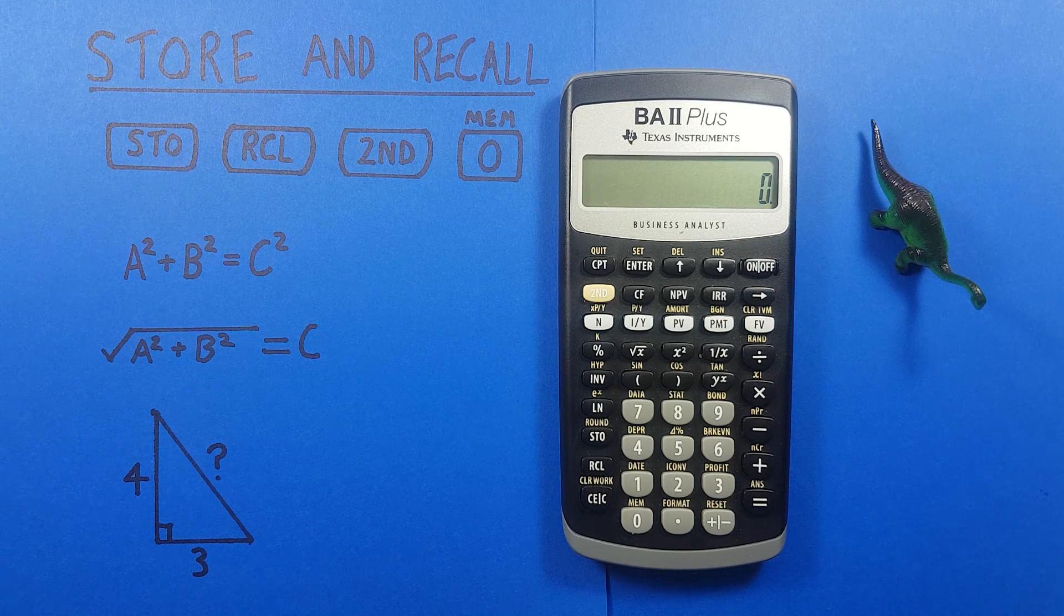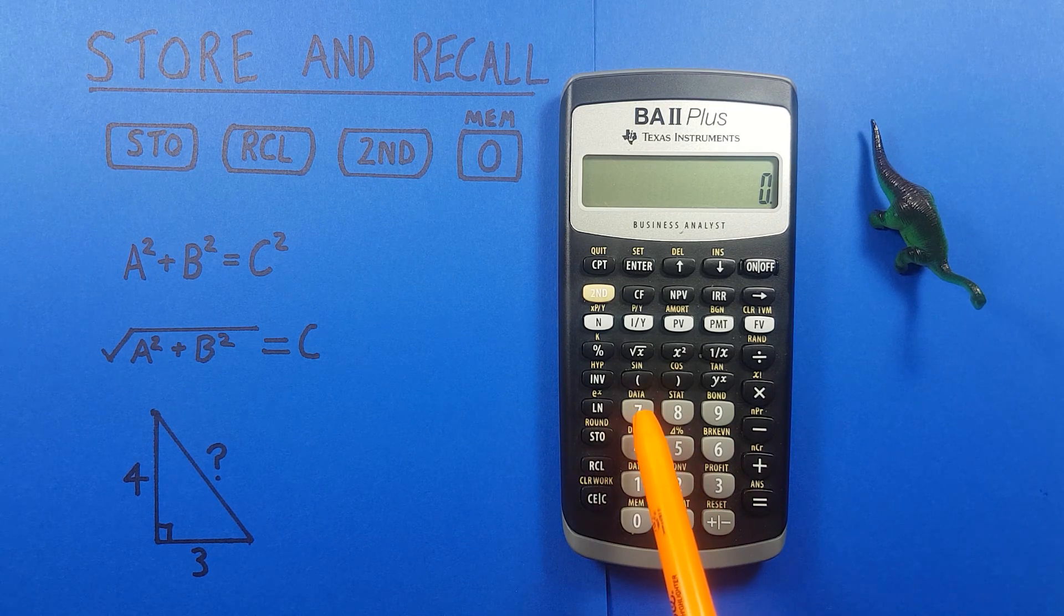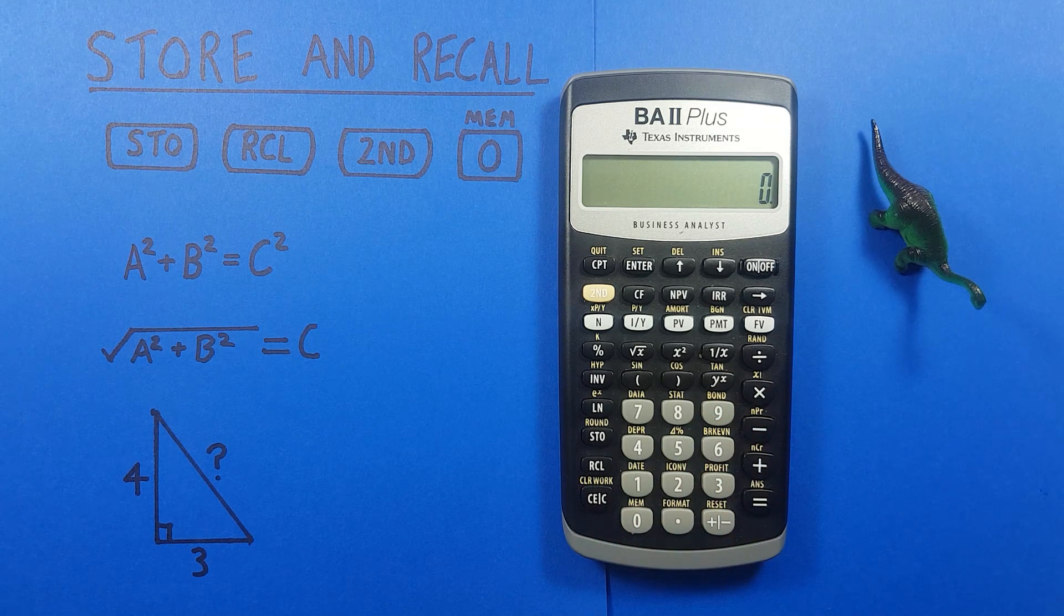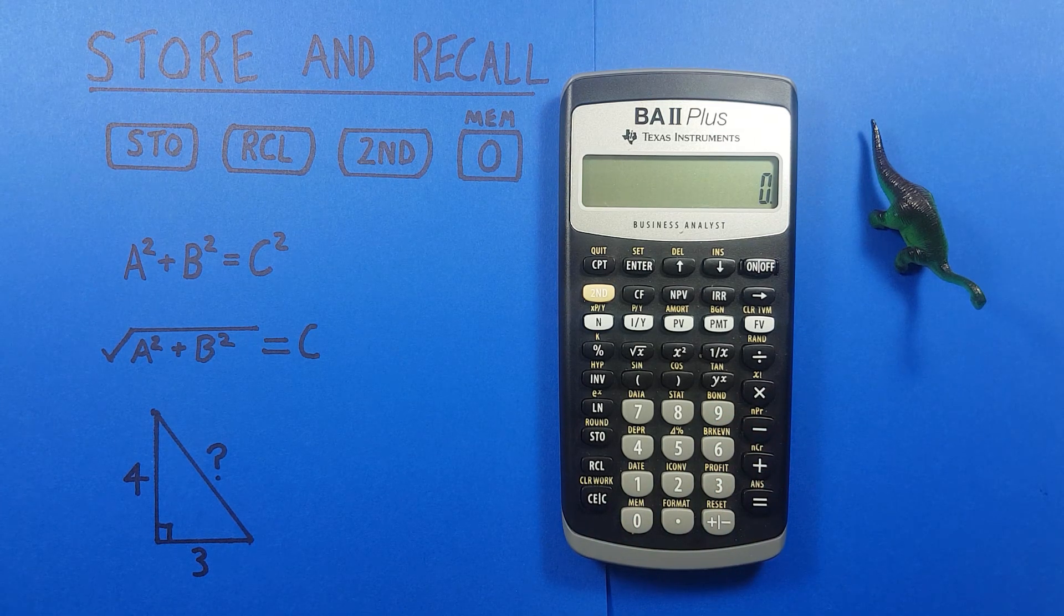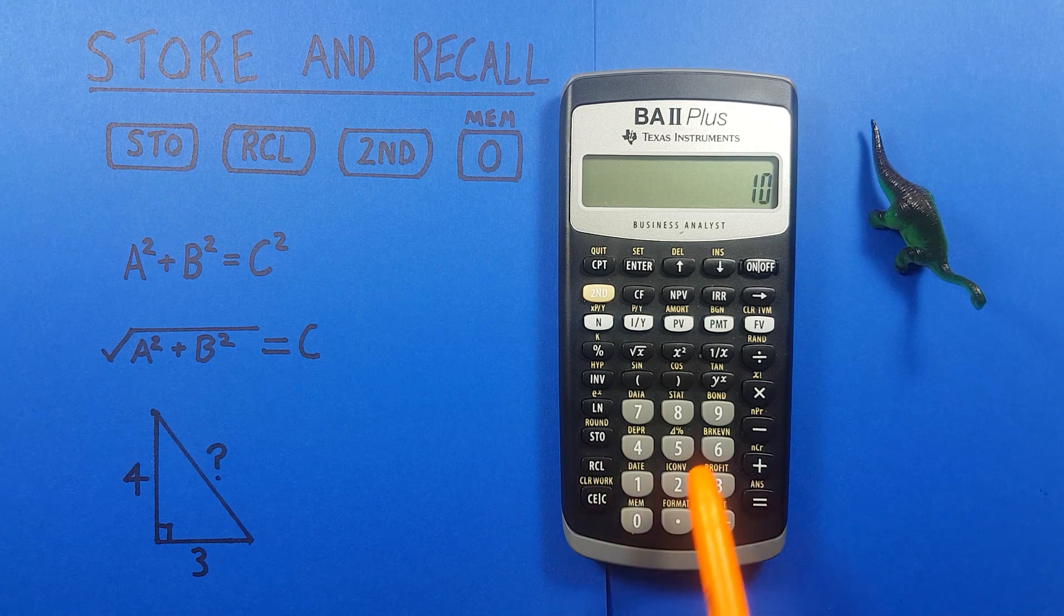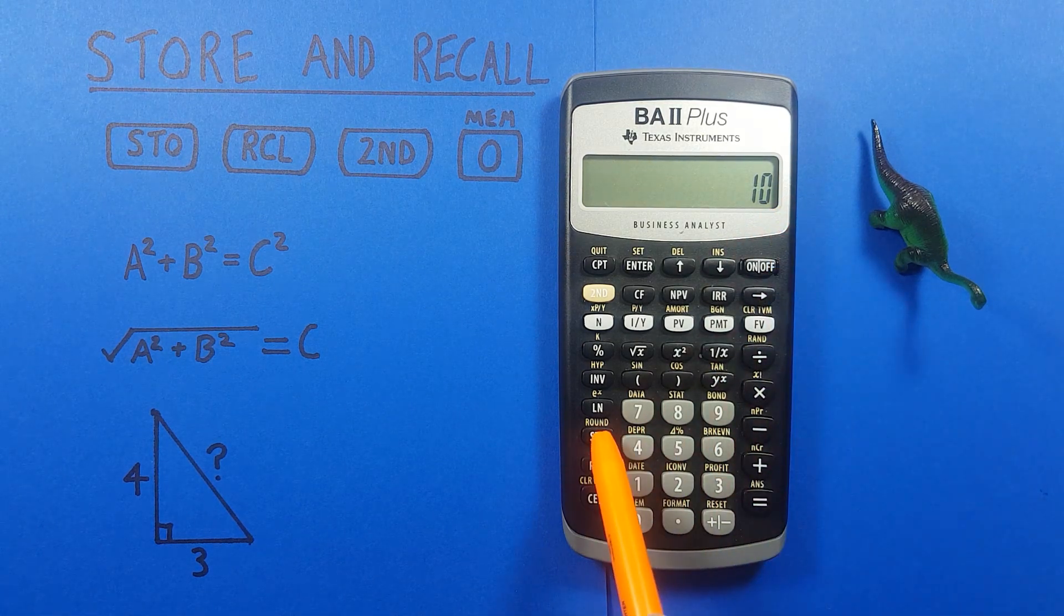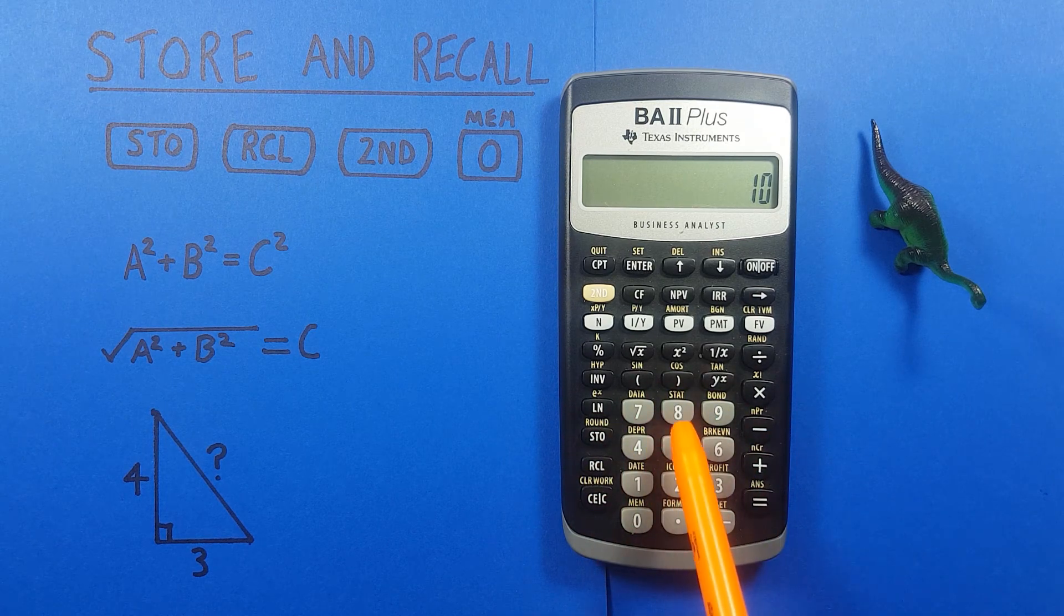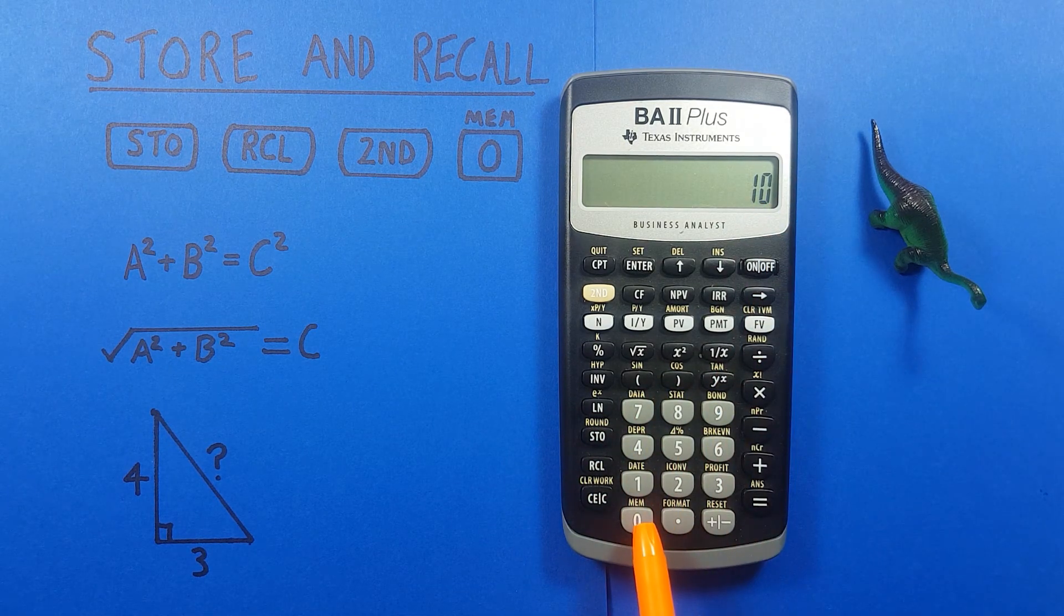Now this calculator has 10 memory slots, one for each number key, so 0 to 9 are each a memory slot. We can store a variable in them by placing it on the screen, so there's 10, then pressing the STO key, and then choosing a key we want to store it in. So let's put this 10 into memory slot 0.